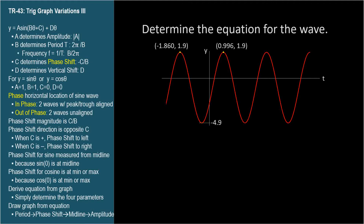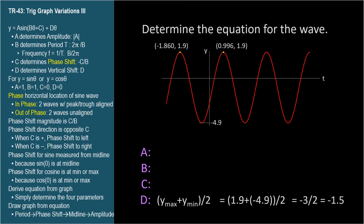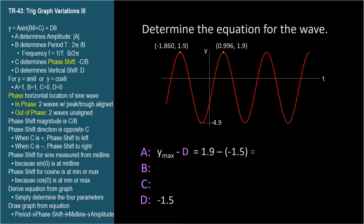Start with the midline, the value for parameter d — it's the average of the maximum and minimum y-value. Y-max is 1.9 and y-min is negative 4.9. So 1.9 plus negative 4.9, all divided by 2, equals negative 1.5. Therefore d equals negative 1.5. The absolute value of the amplitude is y-max minus d: 1.9 minus negative 1.5 equals 3.4.